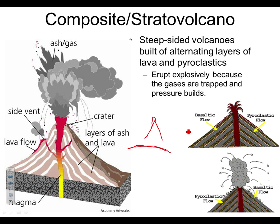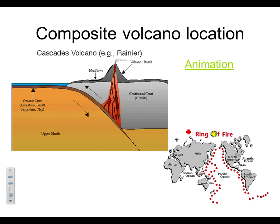So why is the lava high viscosity? Because it's felsic and it's cooler. Remember the picture we had of the ocean plate and the continental plate and the difference between them. So thinking back to that picture — where are we going to have these stratovolcanoes? They're going to be at subduction zones. Let me show you this animation.